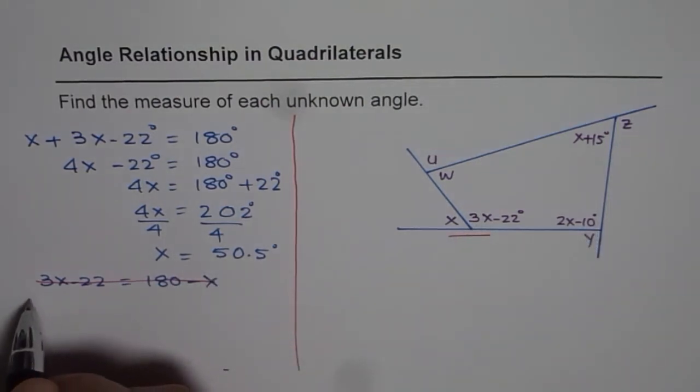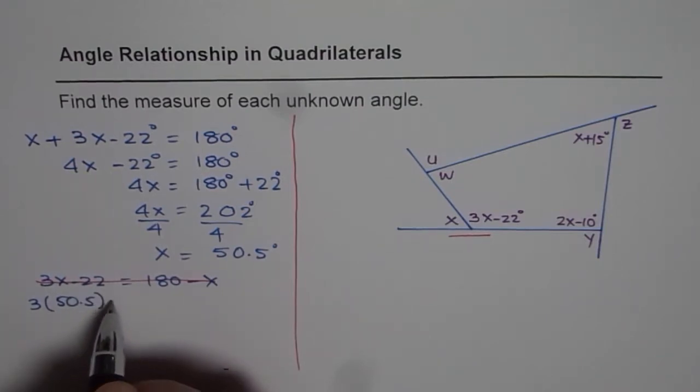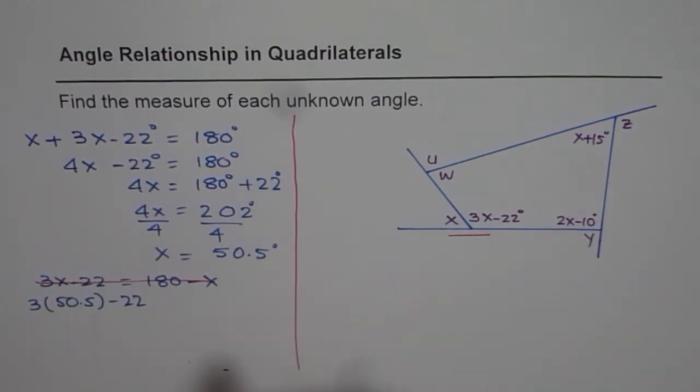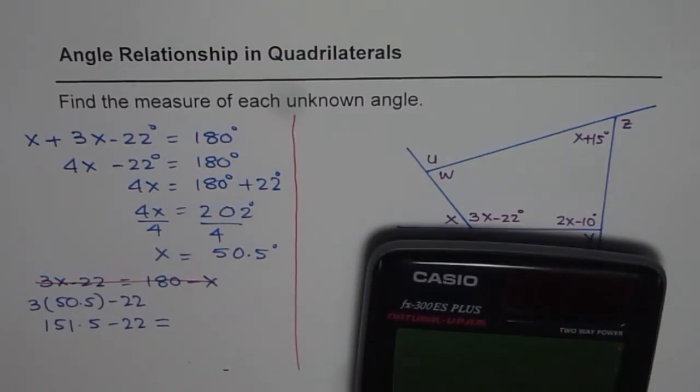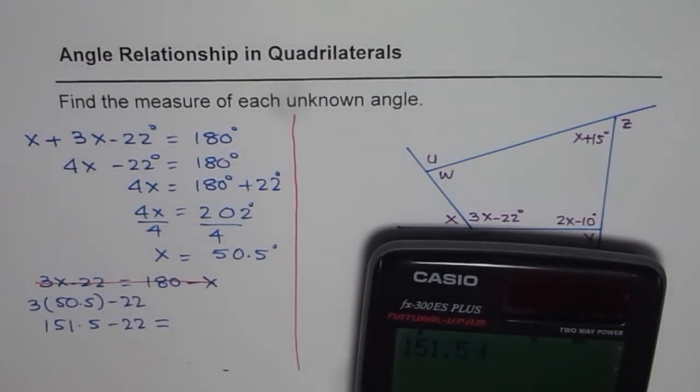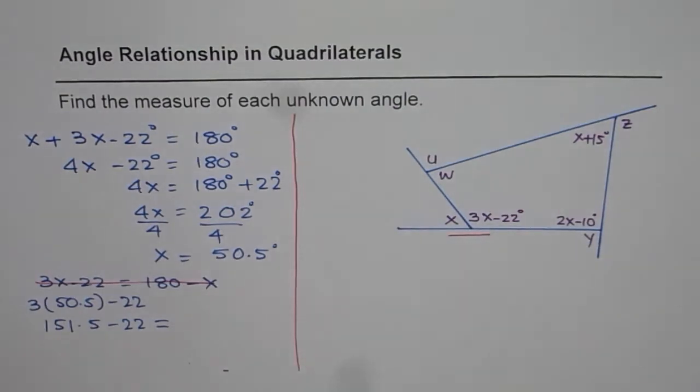So it is 3 times 50.5 minus 22 is this angle. So which is 151.5 minus 22. So you can use calculator and find all these answers. That's my thinking about this. And that is 129.5 degrees.